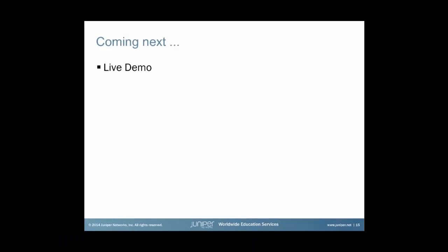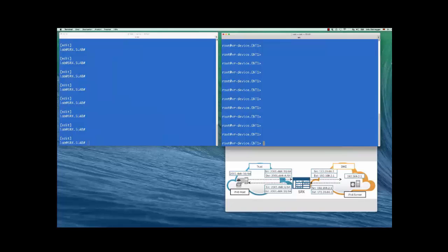Okay, now that we are done with the theoretical part, let's jump into the live demo of what we've just tried to accomplish. In our practical demo, we want to show that our setup — with the IPv6 host on the left-hand side, an SRX device in between, and an IPv4 server in the DMZ zone — can actually connect to one another.